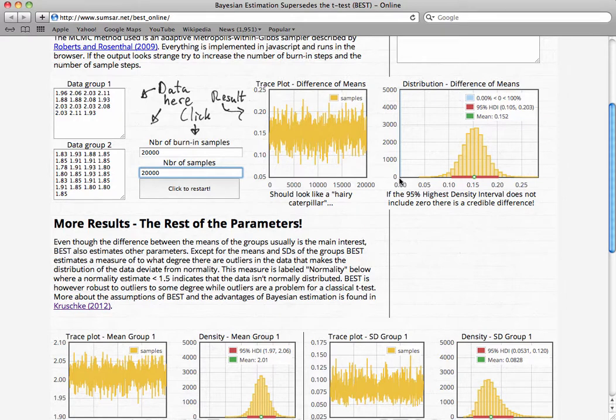If this HDI includes a null value, or something that we would use to say that there's no difference between the groups, such as zero, then we could go ahead and make that claim. Another cool thing about Bayesian inference is that we can establish what's called a ROPE, or region of practical equivalence, around certain values. And if our entire HDI falls within that ROPE, then we can actually accept that value, even if it's a null value.